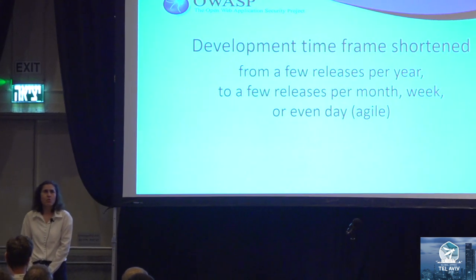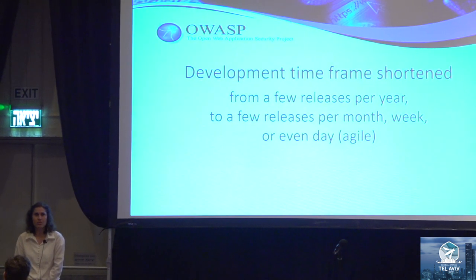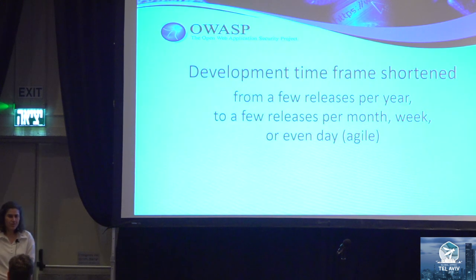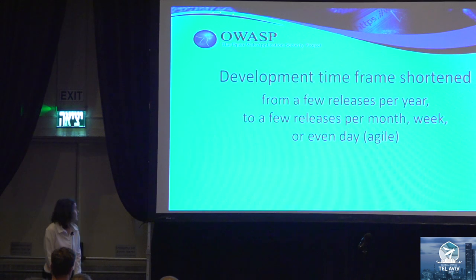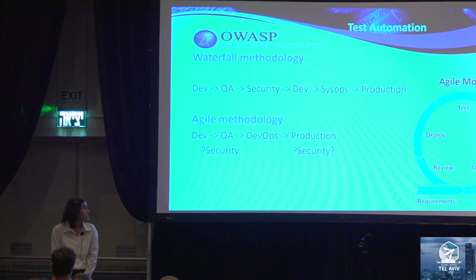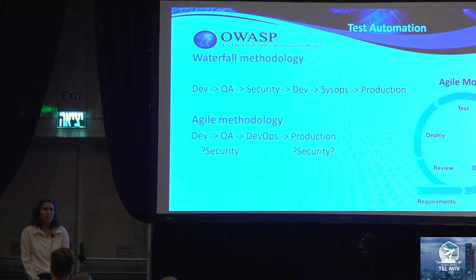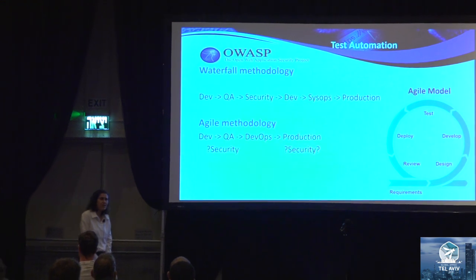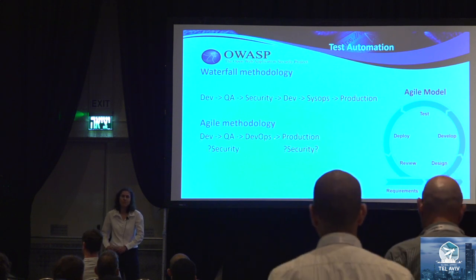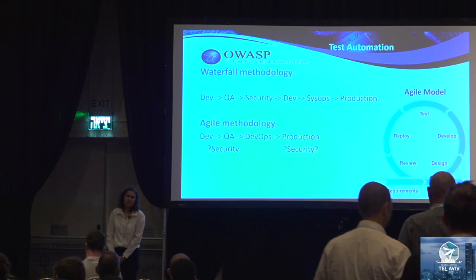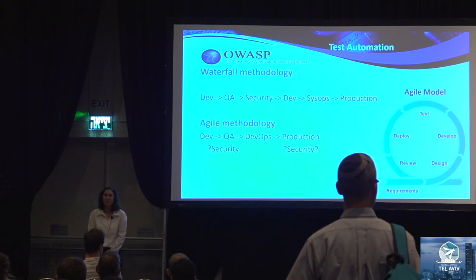As more and more companies are transitioning from Waterfall methodology to Agile methodology, there is a high increase in the number of releases per year. As a result, while we had time in Waterfall methodology, we don't have time in Agile methodology — we don't have the time slot to do the security testing. Therefore, the solution we are going to talk about is using the QA phase to integrate more security testing.